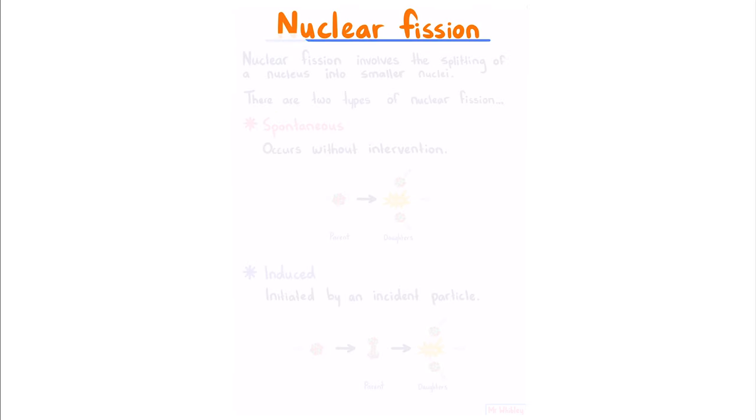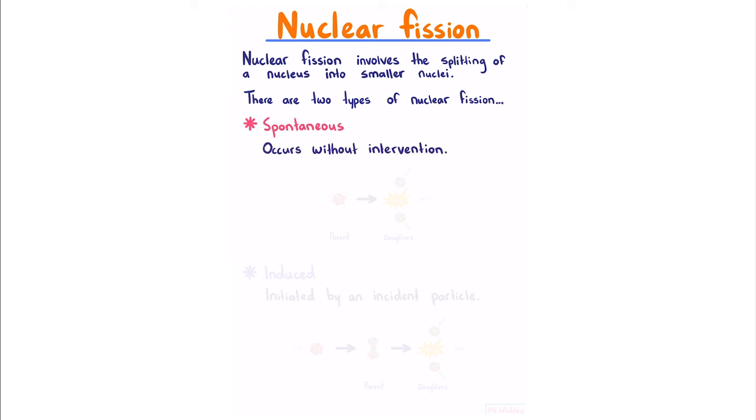Nuclear fission. Nuclear fission involves the splitting of a nucleus into smaller nuclei. There are two types of nuclear fission. Spontaneous, which occurs without intervention, where an unstable parent nuclei spontaneously decays into its daughter products.